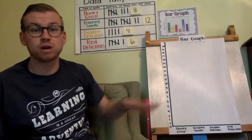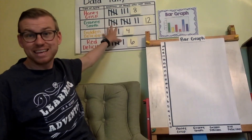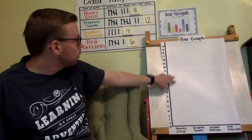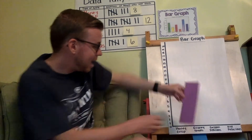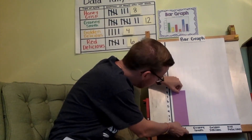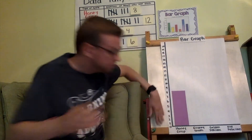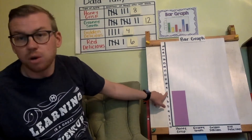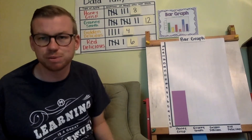We're going to add bars to this graph to display this data. For Honeycrisp, I want a bar that goes all the way up to eight. The top of the bar lands right on the number eight, and that's showing that eight people liked Honeycrisp.